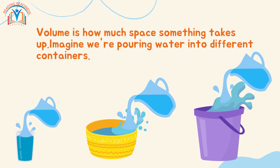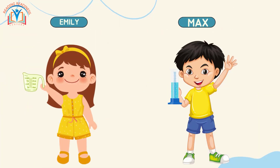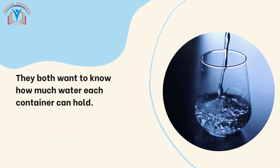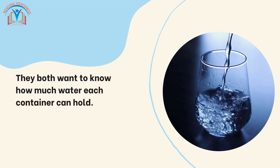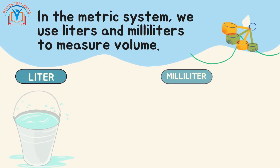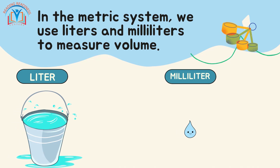Volume is how much space something takes up. Imagine we are pouring water into different containers. Emily is using a measuring cup and Max is using a measuring cylinder. They both want to know how much water each container can hold. In the metric system, we use liters and milliliters to measure volume.